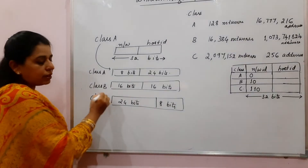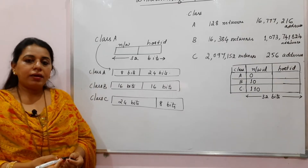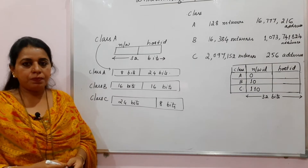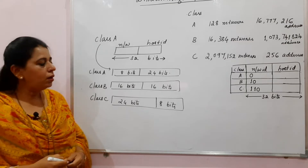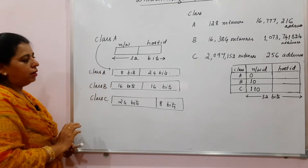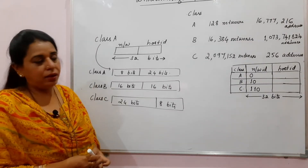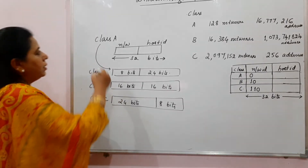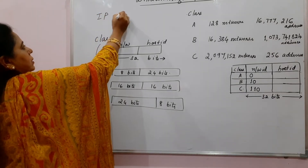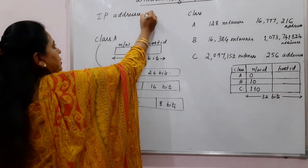Class D is multicast addressing, and class E addresses are reserved for future use. Now, considering classes A, B, and C — the main reason for moving to classless addressing is that more IP addresses are getting wasted.